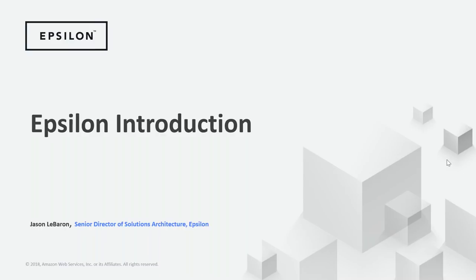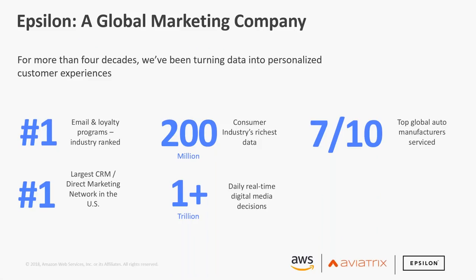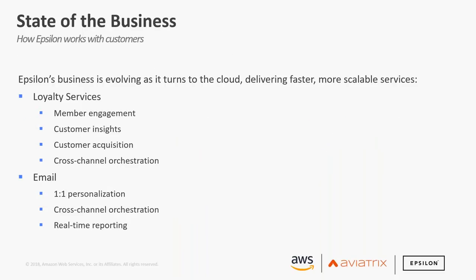My name is Jason LeBaron. I've been with Epsilon about five years and have a strong background in network, security, and cloud. I lead solutions and cloud architecture within our organization. Epsilon is a global marketing company — for more than four decades we've been helping brands improve their marketing and build better customer relationships. Recently recognized by Forrester as a leader in email marketing service providers, we help clients connect with consumers at the right time and place, both online and offline, creating emotional connections. Our business is data-driven with highly personalized, creative experiences built on world-class technology.